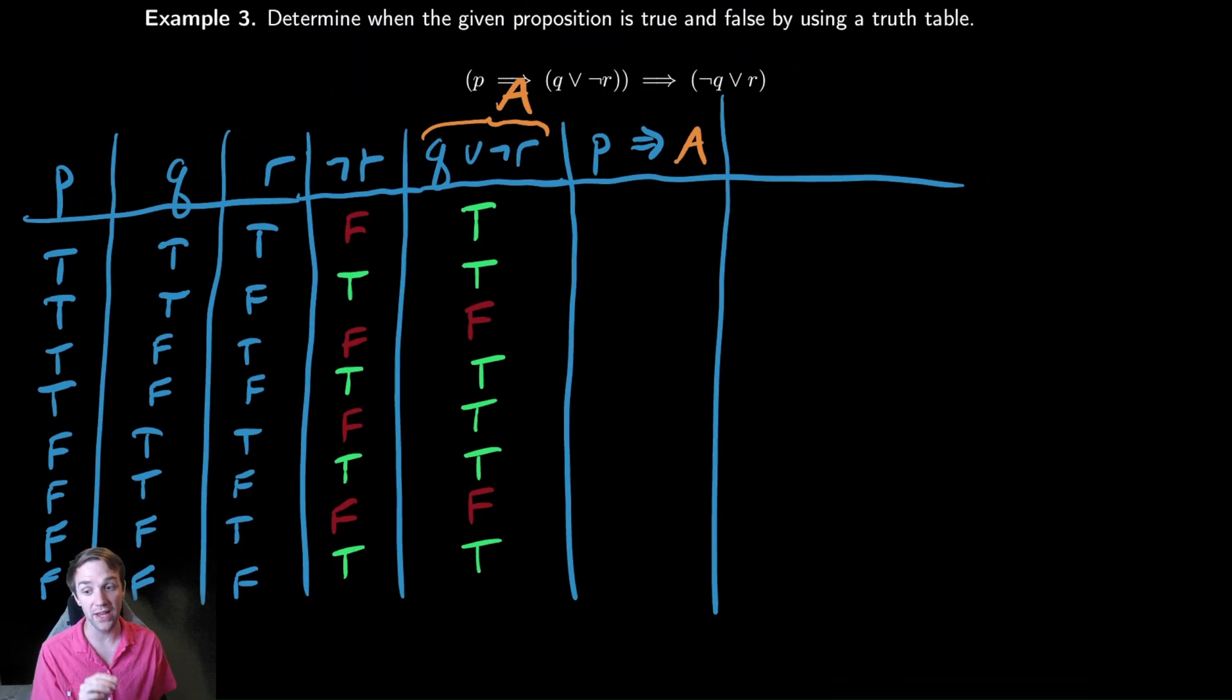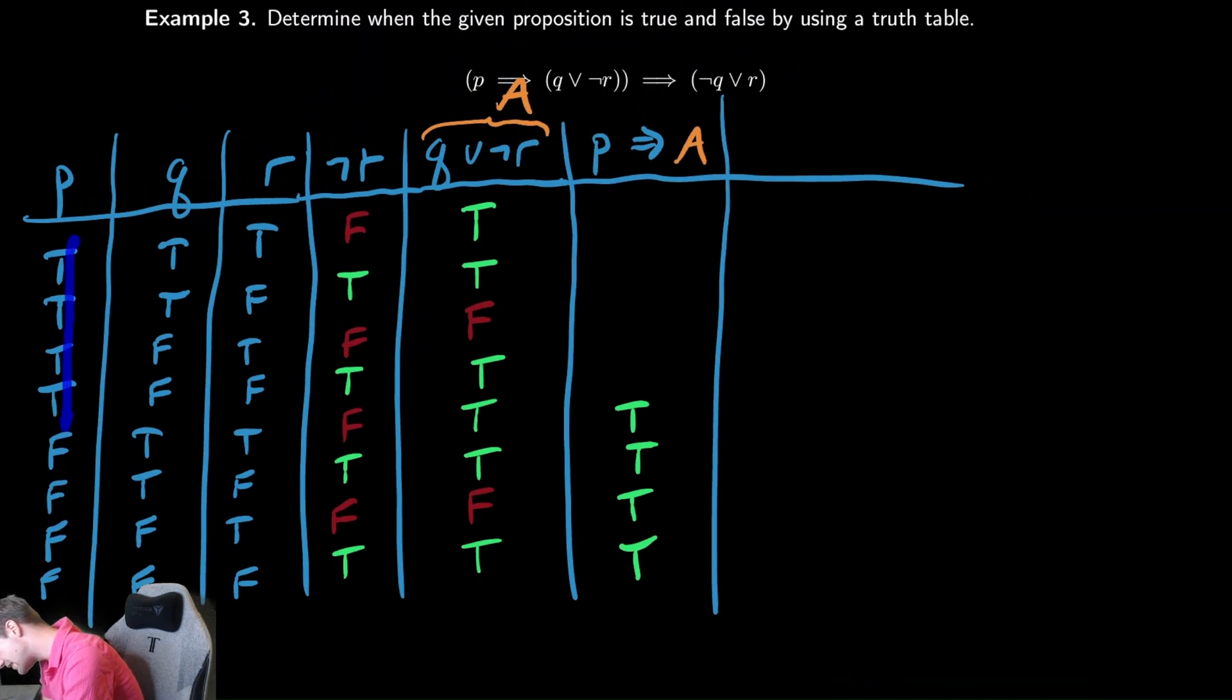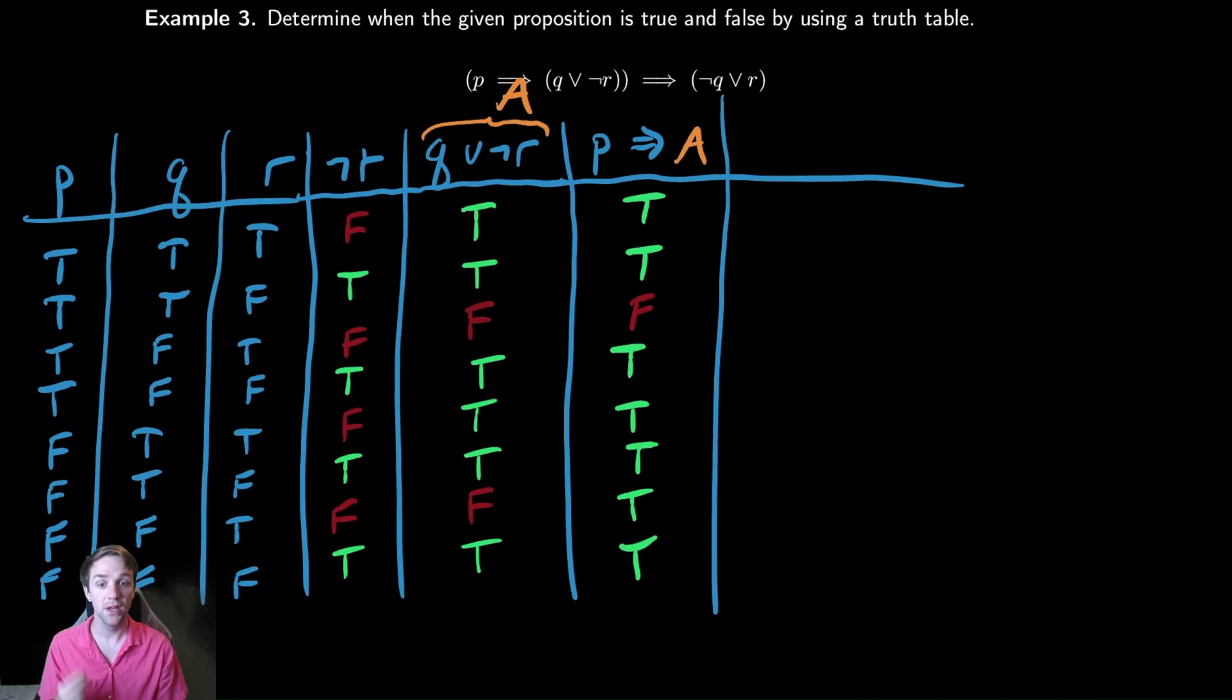And remember how implication works. We have it right above us if we need to consult it. But the most important thing is that if the start is ever false, it's true. So in these bottom four rows, the antecedent is false, so in all of those rows it's automatically true. I don't care what A is, it's totally irrelevant. In the bottom four, it is always true. And then in the case where the premise is true, the thing we are trying to keep an eye out for is when we have a true premise and a false conclusion. So the only place where the first column is true and this A column is false is this third row. So in the third row, we're going to have a false and everywhere else a true.